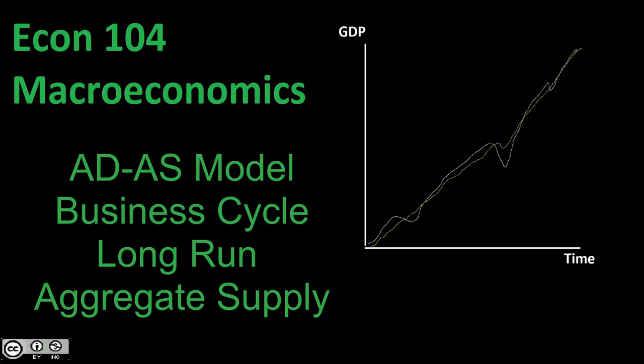Welcome back to Econ 104, Introduction to Macroeconomics. In today's video we're going to go through our aggregate demand/aggregate supply model, bringing in the long-run aggregate supply curve. From there we can begin talking about our business cycle, our adjustments, and our readjustment back to long-run equilibrium. This builds upon our last two videos.